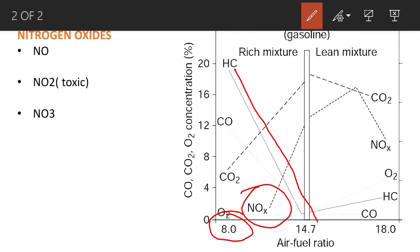As we move towards a lean mixture, nitrogen oxide emissions increase. NOx emissions are maximum when the air-fuel mixture is slightly more than the stoichiometric ratio. This is our stoichiometric point, and slightly beyond it is where the maximum NOx value occurs.